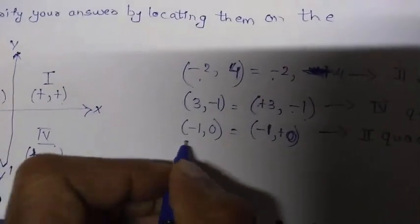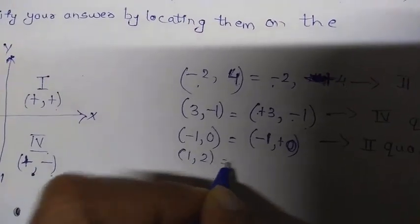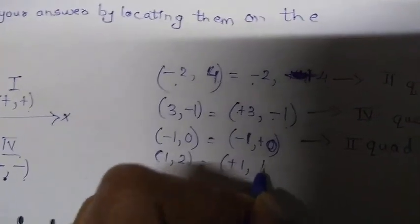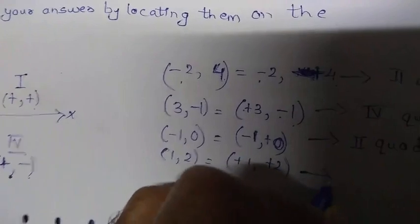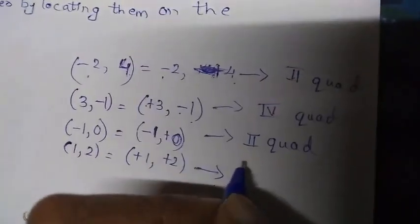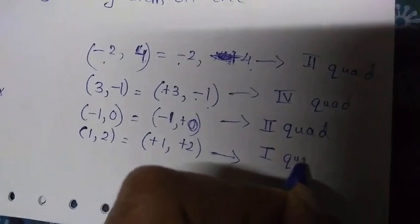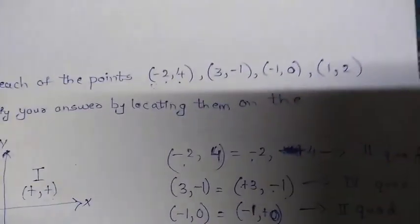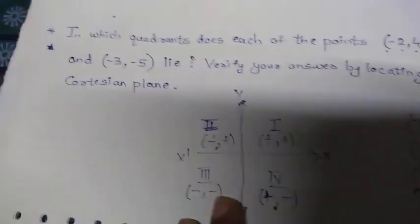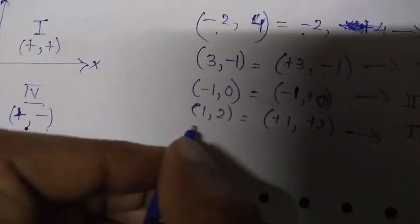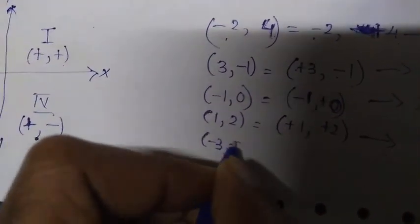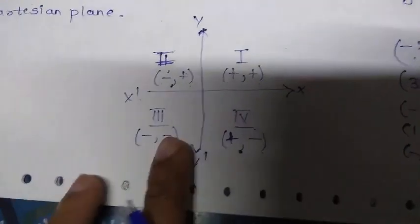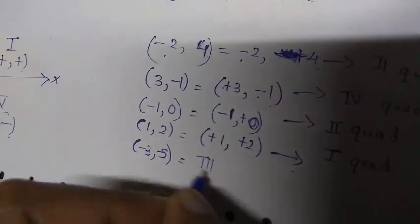Next, (1, 2) is plus 1, plus 2 — both positive. In the 1st quadrant both signs are positive, so (1, 2) lies in the 1st quadrant. Finally, (−3, −5): both are negative. In which quadrant are both signs negative? The 3rd quadrant. So (−3, −5) lies in the 3rd quadrant.